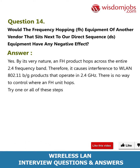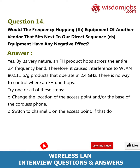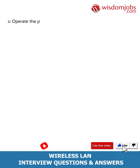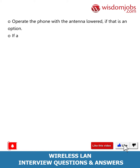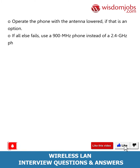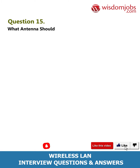Try one or all of these steps: change the location of the access point and/or the base of the cordless phone; or switch to channel 1 on the access point — if that does not work, try channel 11; or use a remote antenna on the client card if it is a PCI or EISA-based card; or operate the phone with the antenna lowered if that is an option; or if all else fails, use a 900 MHz phone instead of a 2.4 GHz phone.